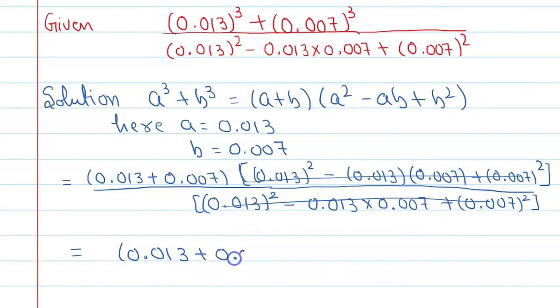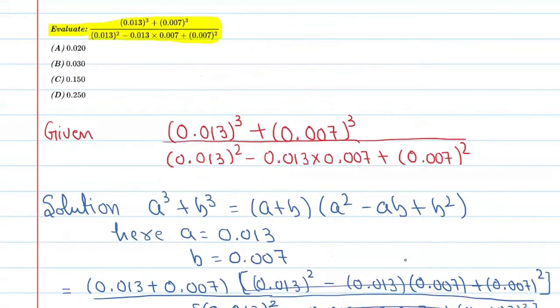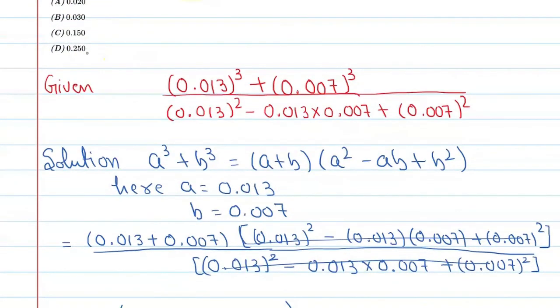If you add this, the value you'll get is 0.02. So if we look at the options, the correct option is A.